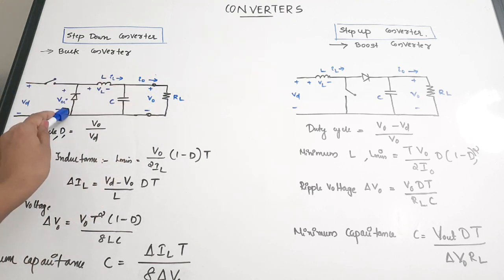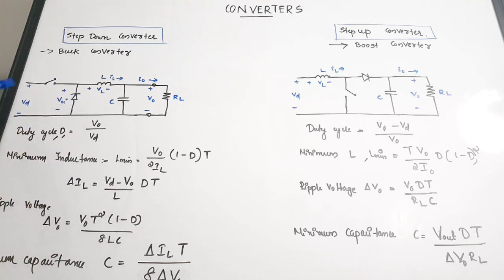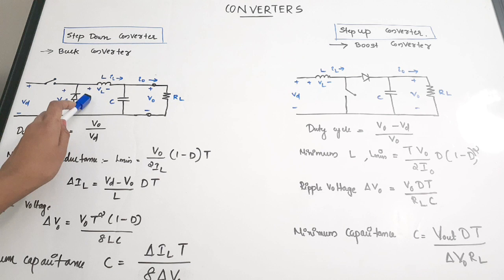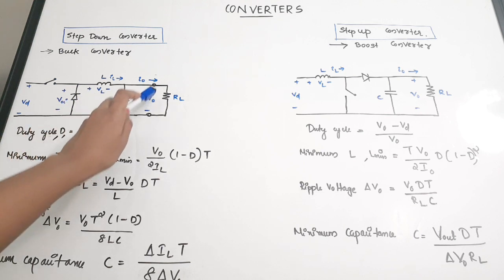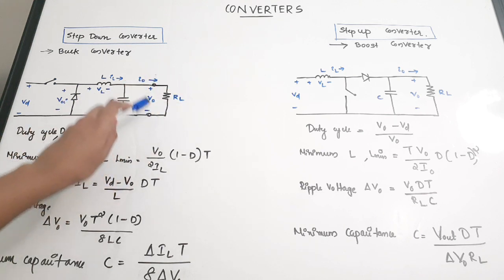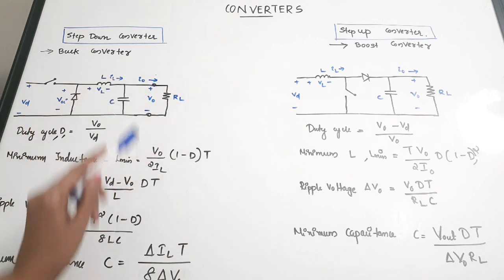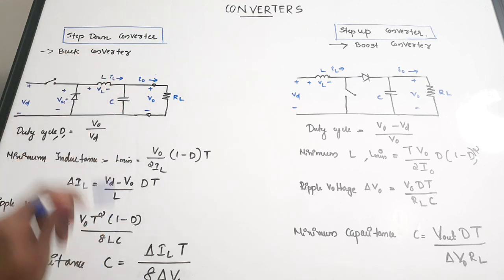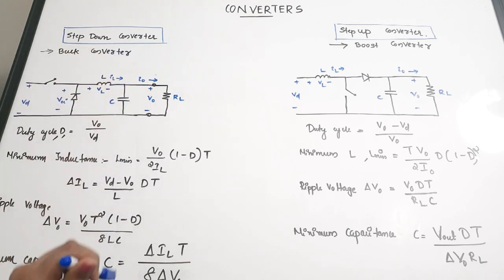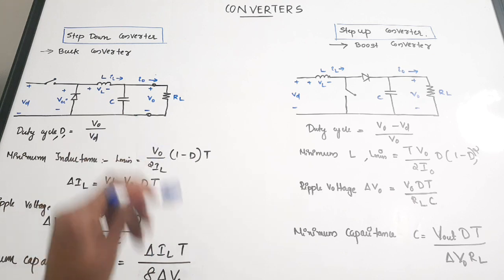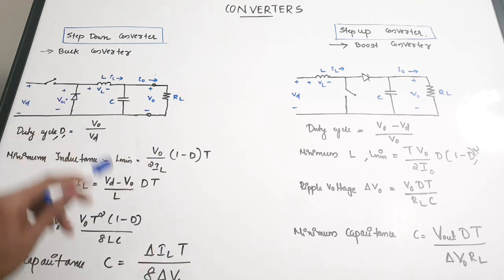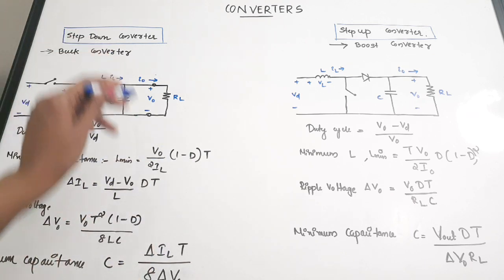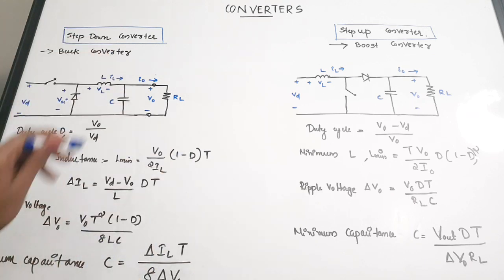In the buck converter circuit, there is a switch, an inductance, and a capacitance. There is a load resistance, and Vout is the output voltage obtained across the load. Iout or I-zero is the output current. Now let us look at the important equations from this step-down converter.